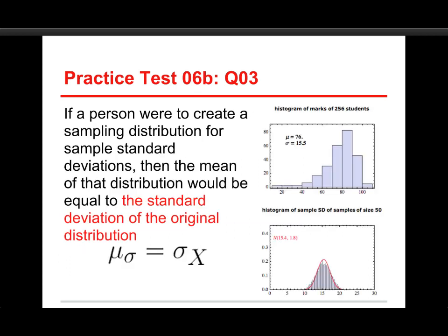Let's take a quick look at how this works. The formula asserts that mu-sub-sigma — the population mean of the standard deviation distribution — equals sigma-sub-x, the standard deviation of the original distribution. As an example, a skewed distribution has a mean of 76 and a standard deviation of 15.5. Taking 10,000 samples of n=50 each, the result is a nice normal distribution with a mean of about 15.4, which is very close to the original population standard deviation of 15.5.